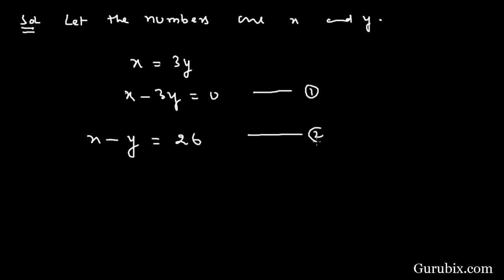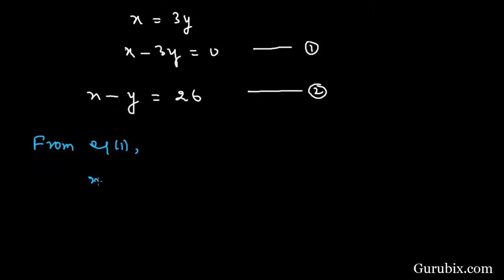We shall solve this pair of linear equations by using substitution method. For that we shall start from equation number one. Equation number one is x minus 3y equals zero. This means x equals 3y. Now we shall put this value in equation number two.